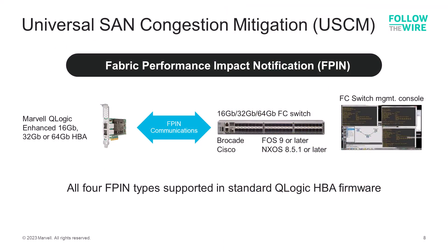Universal SAN Congestion Mitigation enables F-PIN communications with both Brocade and Cisco fabrics — hence the term universal — as these adapters support this in any Fiber Channel fabric. Competitor offerings typically only support this kind of communication with Brocade switches and only provide the link integrity feature as standard. For the other notifications, customers must purchase additional software licenses to enable these.